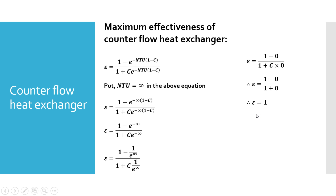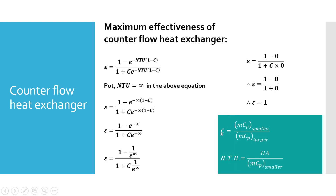So in case of counter flow heat exchanger, the maximum effectiveness achievable is 1, which is why counter flow heat exchangers are used in most cases. The capacity ratio C is the heat capacity of the smaller fluid divided by the larger heat capacity, and NTU is UA upon MCP smaller. In summary, for parallel flow the maximum effectiveness is 1 upon (1 plus C), whereas for counter flow the maximum possible effectiveness is 1.